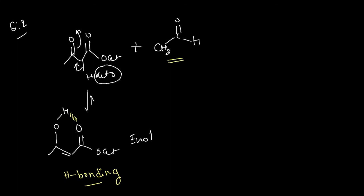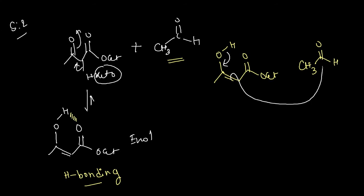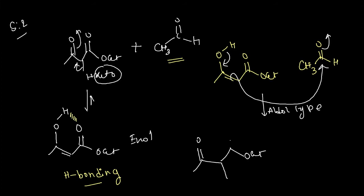In the enol form, ethyl acetoacetate (with CO2Et) reacts with acetaldehyde in an aldol-type reaction. The enol rotates and attacks the aldehyde carbon. This is the aldol-type reaction. After the attack, a CH3 group and an OH are present, and then a water molecule is eliminated.